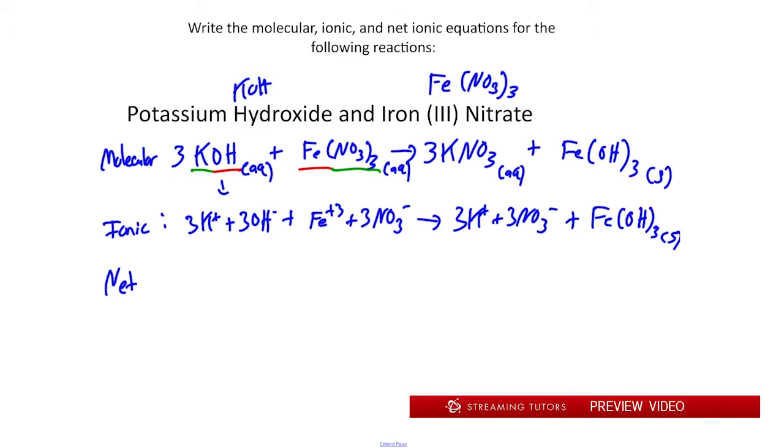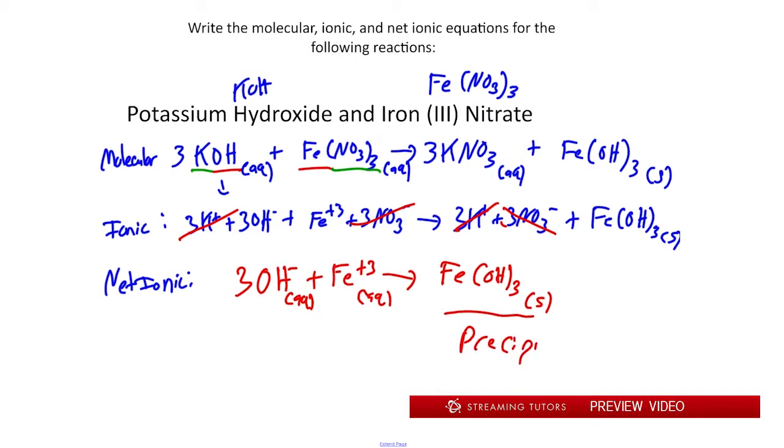There's our ionic equation. For our net ionic equation, we're going to cancel out like species on both sides. We'll get rid of K+ and NO3-. We're left with 3OH- plus Fe+3 forms Fe(OH)3. Everything on the left side is aqueous, everything on the right side is solid. This is our precipitate. That's a pretty straightforward way of going about things. The most important thing is to identify which species are insoluble or soluble, and that's based on your solubility rules.